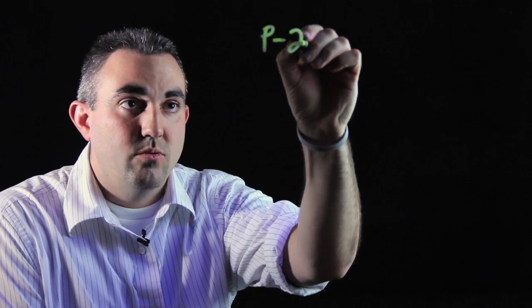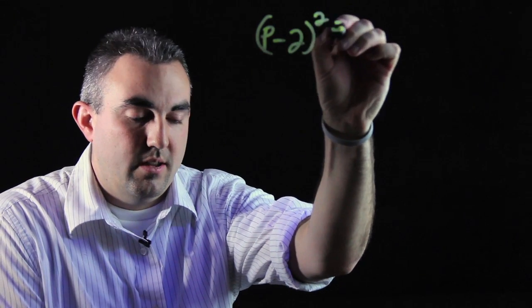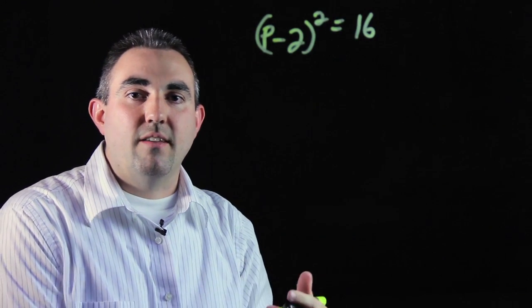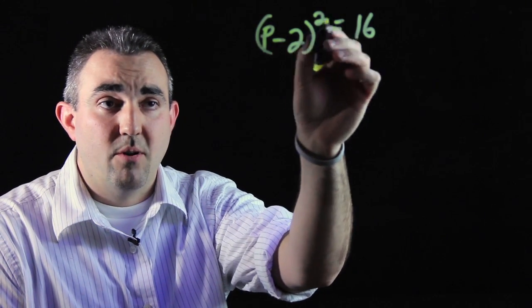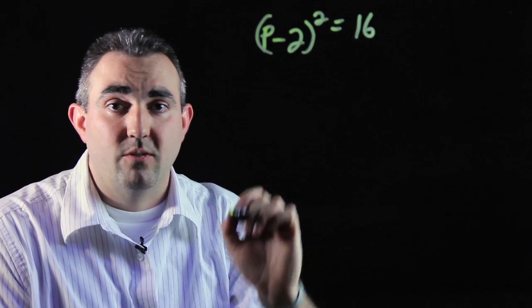Sometimes our equations are set up in a way that we already have direct use of the square root property able to go, ready for our use. So p minus 2 squared equals 16. In this case, the direct use is set up for us because we have a perfect square on this side and we have a perfect square on this side.